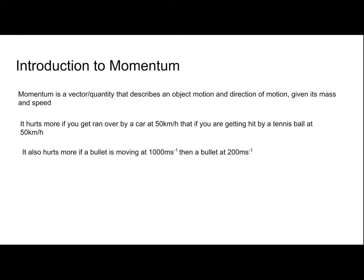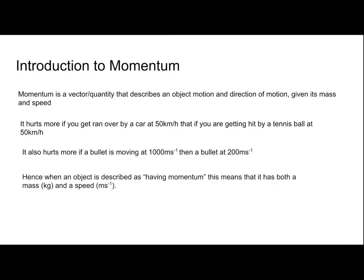Another example: it also hurts more if a bullet is moving at 1,000 m/s than a bullet at 200 m/s. Basically, a faster object, considering it's the same mass, is obviously going to cause more force, so it's going to hurt more. Hence, we can conclude that when something has momentum, it both has a mass and a speed.